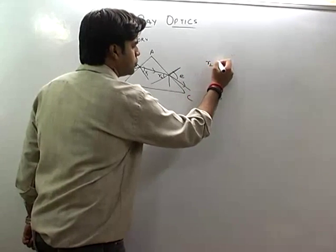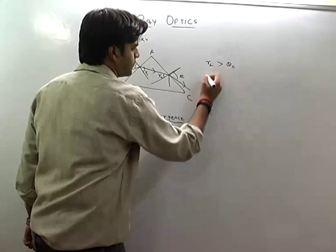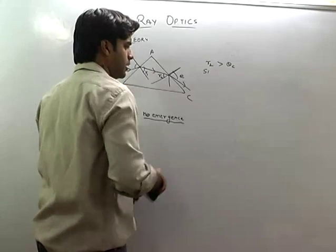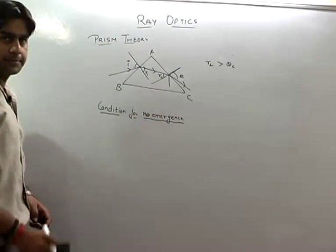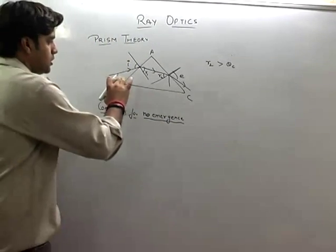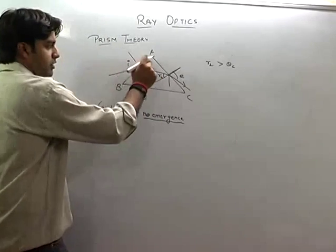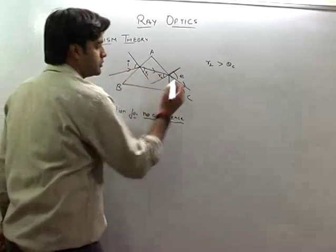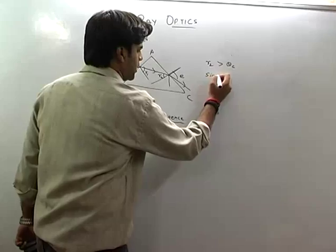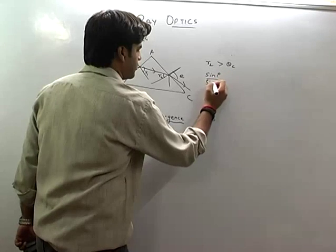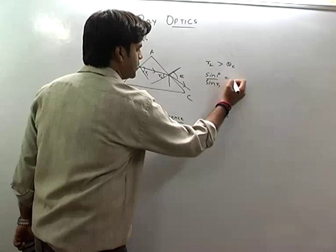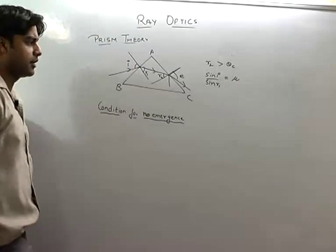This should be greater than theta c or this should be greater than theta c. If I see this reflection on the AB surface, then what will happen? sin i by sin r1 is equal to mu. Is that right?